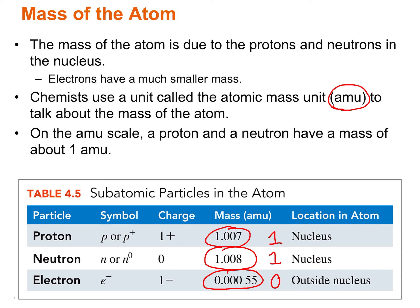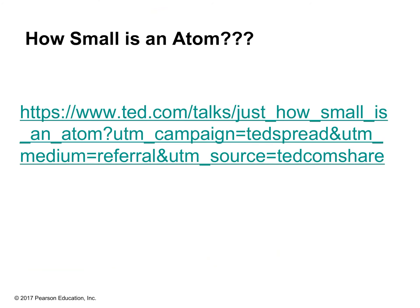Protons are positively charged, electrons are negatively charged. We have abbreviations for all of these: instead of always writing out protons, neutrons, and electrons, we write P+, N0, and E-. P is for proton and the plus because it's positively charged; N is for neutron and zero because it's neutral; E is for electron and minus because it's negative. Protons and neutrons are located in the nucleus, and electrons are outside the nucleus in the electron cloud.